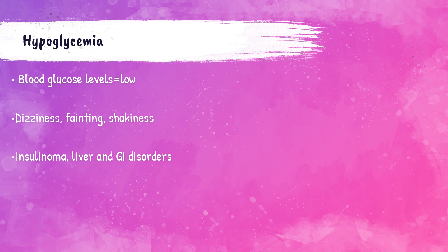Patients can also experience low levels of glucose in the bloodstream, a condition called hypoglycemia. Hyperglycemia means too much glucose; hypoglycemia means too little. Hypoglycemia can be caused by a tumor producing too much insulin, called an insulinoma — this causes too much glucose to be taken up into cells, lowering bloodstream levels. It can also be caused by disorders within the liver and the gastrointestinal system. Patients experiencing hypoglycemia can be dizzy, shaky, and may even faint.